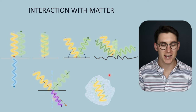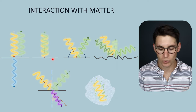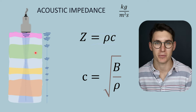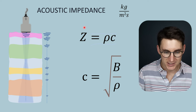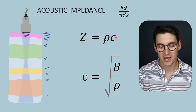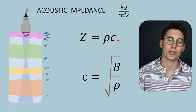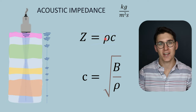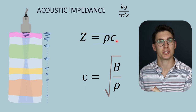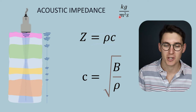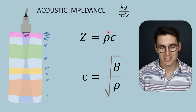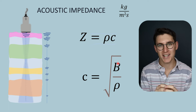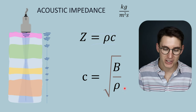Acoustic impedance determines these interactions at tissue boundaries. Acoustic impedance is an inherent property specific to a tissue type, denoted by the letter Z. It can be calculated as the product of the tissue density and the speed at which sound travels through that tissue. We measure density in kilograms per meter cubed and speed in meters per second, so acoustic impedance SI units are kilograms per meter squared per second. Both tissue density and speed contribute to this value, and speed is determined by the tissue's bulk modulus — its stiffness and resistance to compression — as well as density.